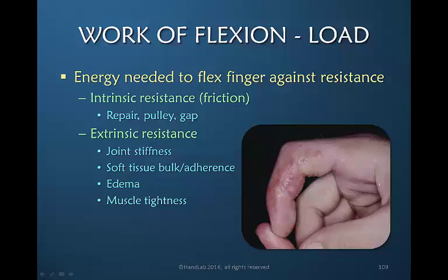There are two distinctly different sources that create resistance and thereby increase load. The intrinsic resistance, or friction, has to do with the nature of the repair, the status and location of the pulley, any gapping, and the actual location of the tendon. The extrinsic resistance, which can increase the load necessary to flex the finger, includes stiff joints, adherence of soft tissue, a bulky thick scar, presence of edema, and muscle-tendon unit tightness.